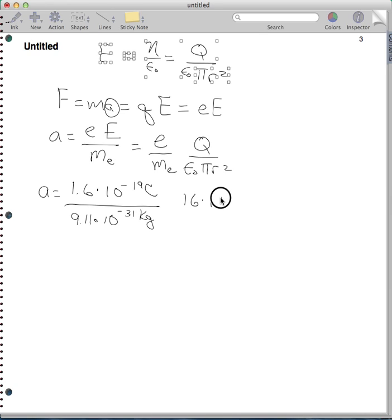The q here, they tell us, is 16 times nanocoulombs, so that's times 10 to the negative 9 coulombs. My epsilon zero is 8.85 times 10 to the negative 12, and the units there are coulombs squared over newton meter squared.